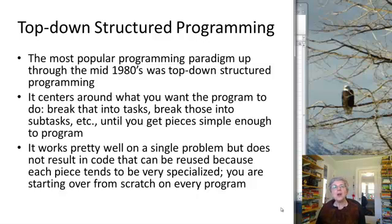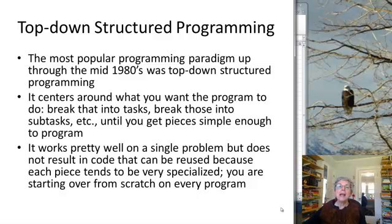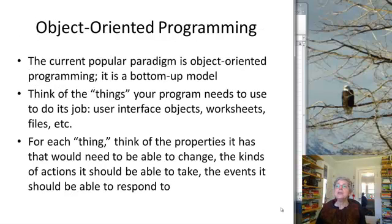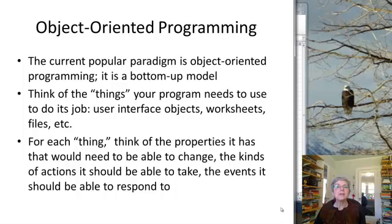As bodies of code developed and companies started producing more and more code, they wanted to be able to reuse and not have to reinvent things every time. That led to a different approach called object-oriented programming. This is more of a bottom-up than a top-down method. You think about what kinds of objects your program needs to use.